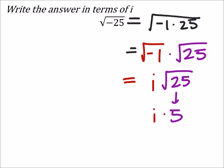So this would be i times 5, but the more formal way to write this would be with the 5 as a coefficient of i. So we would just switch this to be 5i.